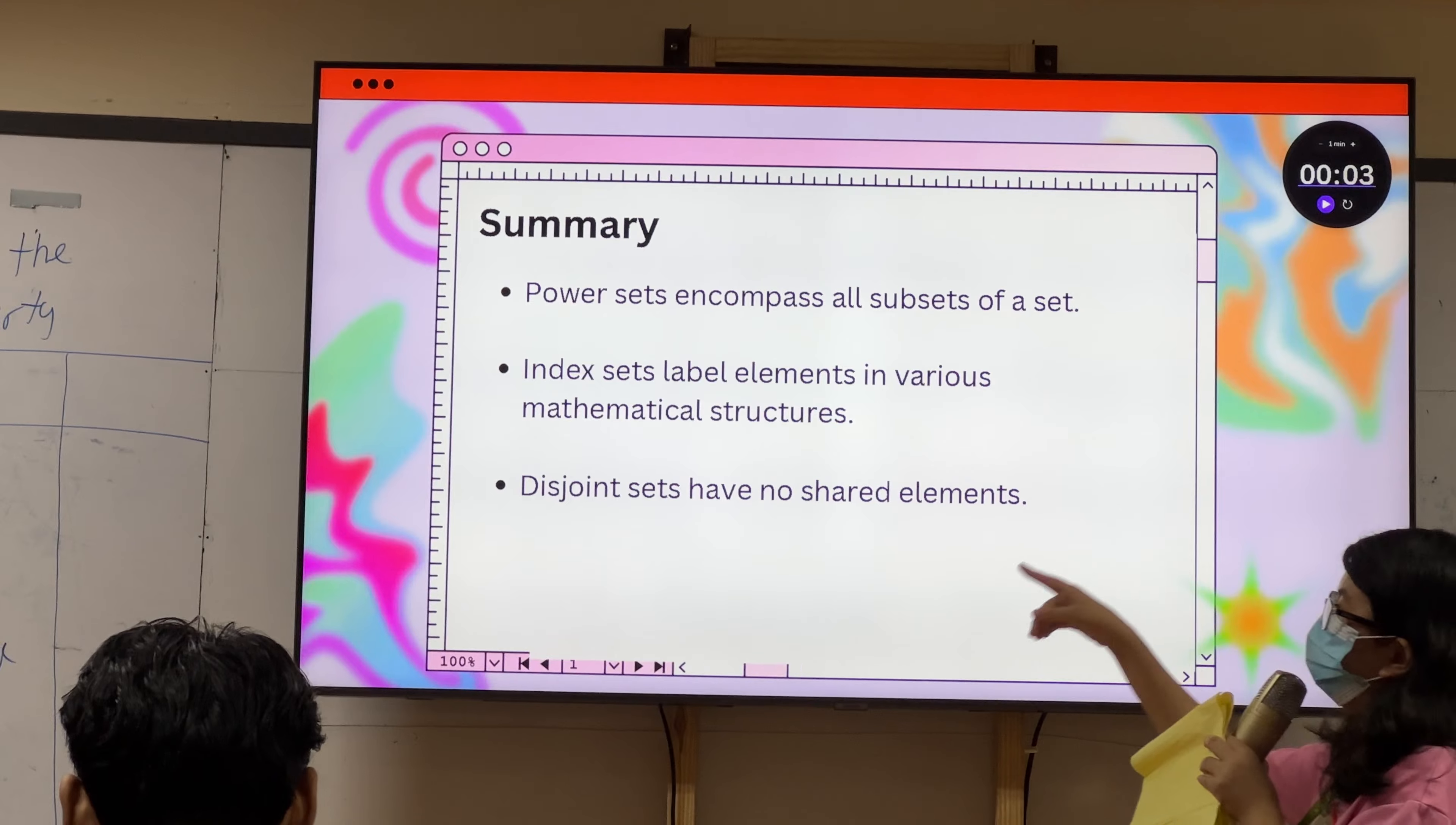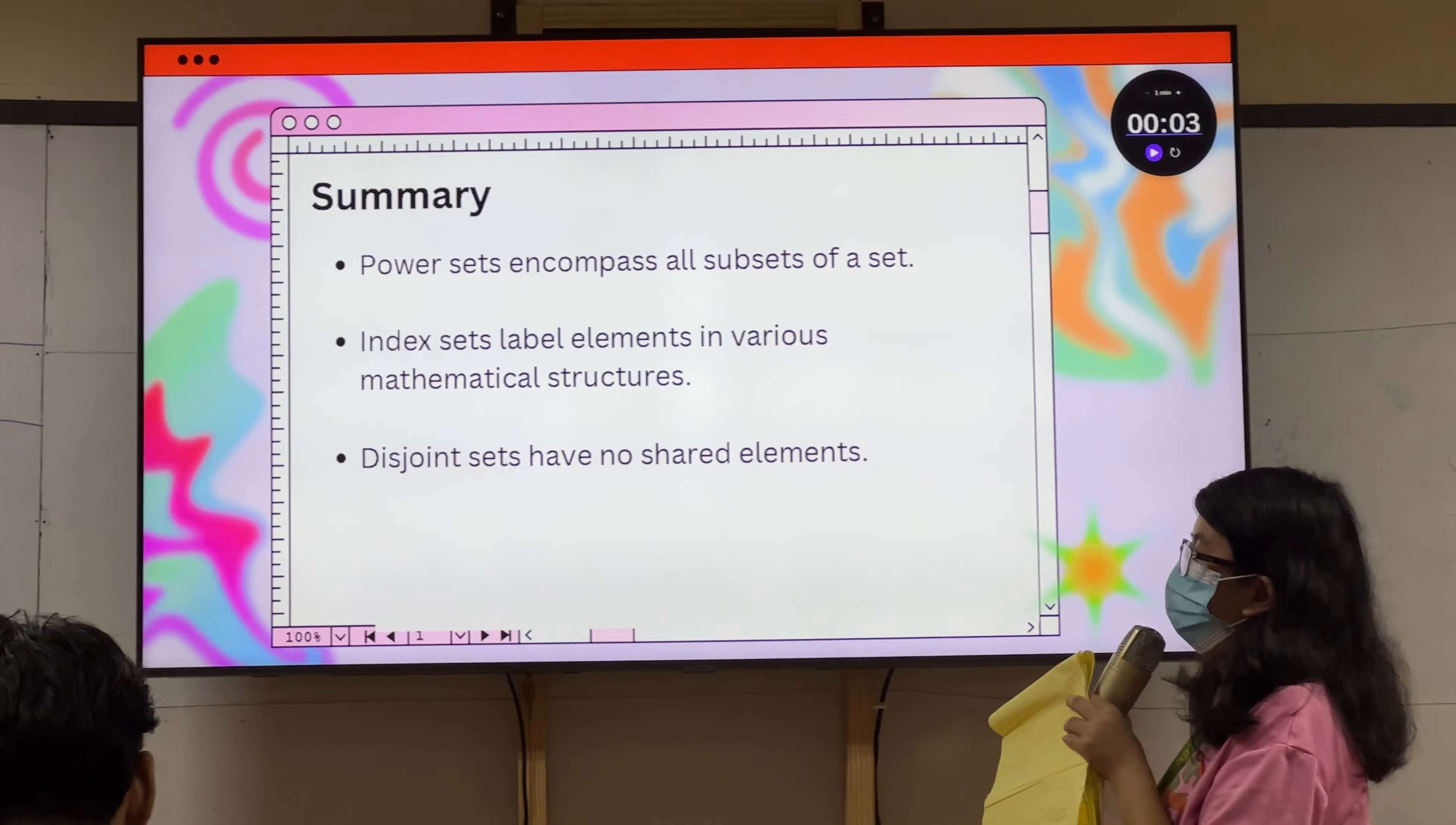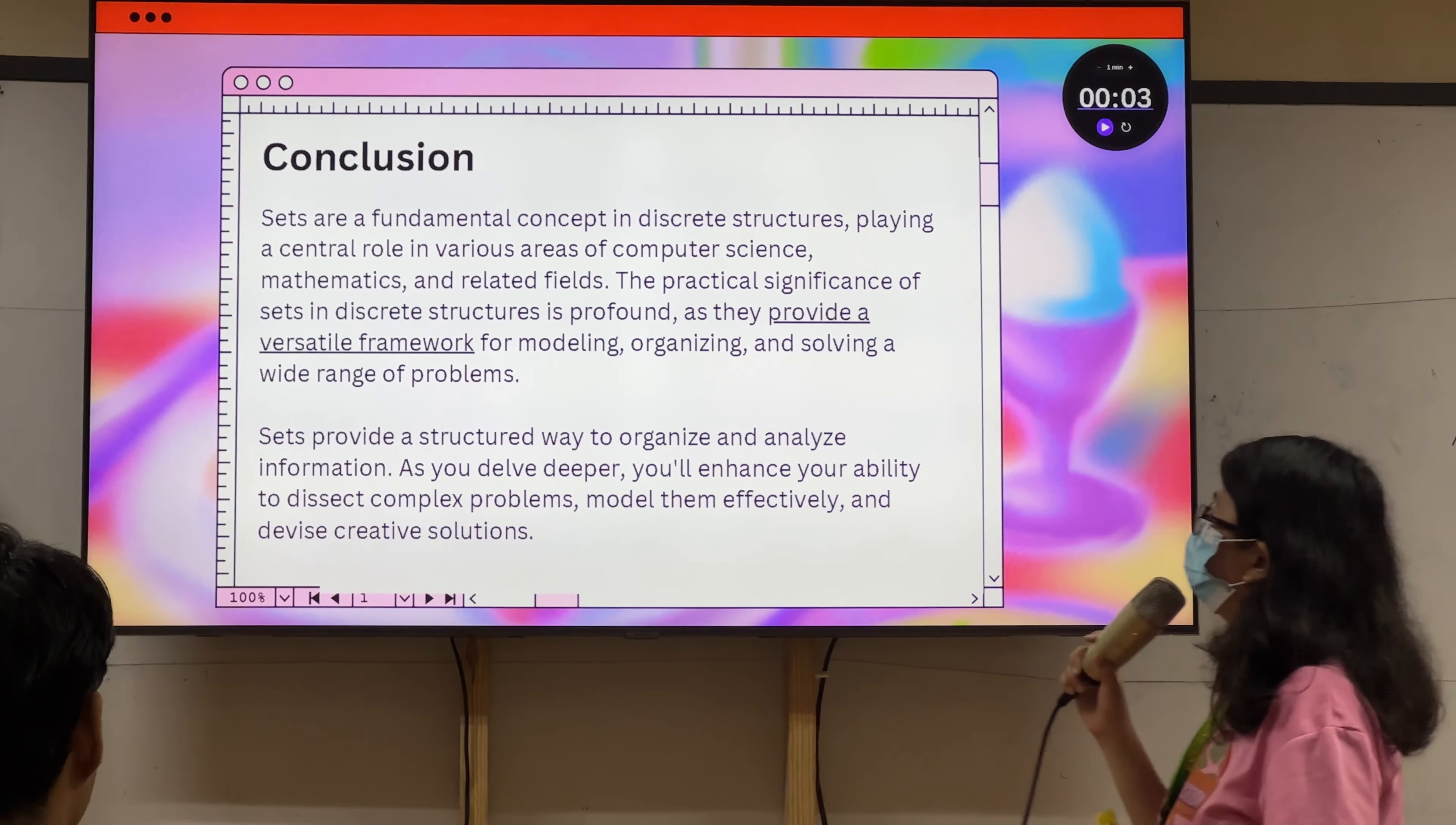So, summary. Power sets encompasses all the subsets of a set, all possible combinations, sa iyang elements. Na index sets, they are label elements in various mathematical structures, mga label sa sets. Na disjoint sets, they are sets na, do not share any common element.